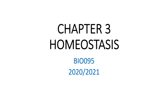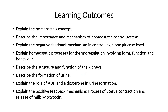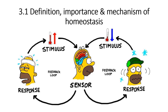Chapter 3: Homeostasis. In this chapter, students should be able to explain the homeostasis concept, describe the importance and mechanism of homeostatic control system, explain the negative feedback mechanism in controlling blood glucose level, explain homeostasis processes for thermal regulation involving form, function, and behavior, describe the structure and functions of the kidneys, describe the formation of urine, explain the role of ADH and aldosterone in urine formation, and explain the positive feedback mechanism — the process of uterus contraction and release of oxytocin.